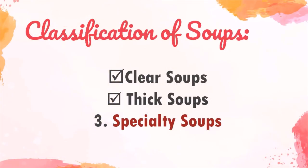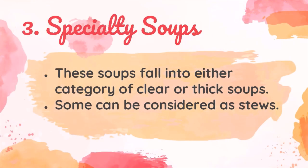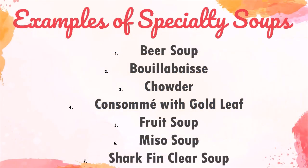The next classification of soups is specialty soups. Specialty soups fall into either the category of clear or thick soups, and many are hearty varieties that can also be considered as stews. Here are some common examples of specialty soups: beer soup, bouillabaisse, chowder, consommé with gold leaf, fruit soup, miso soup, and shark fin clear soup.